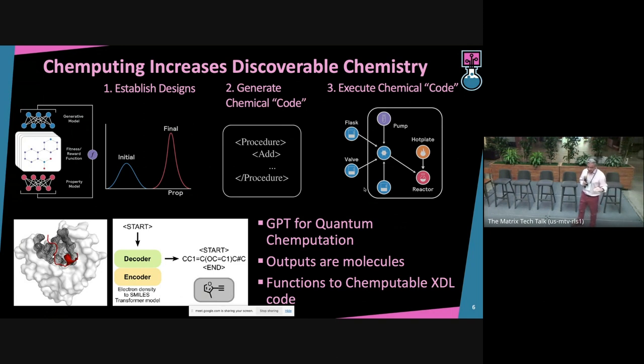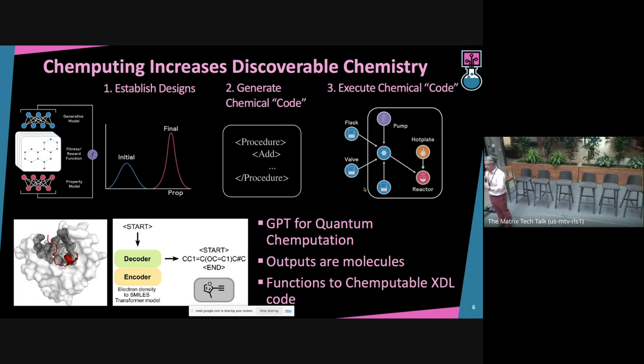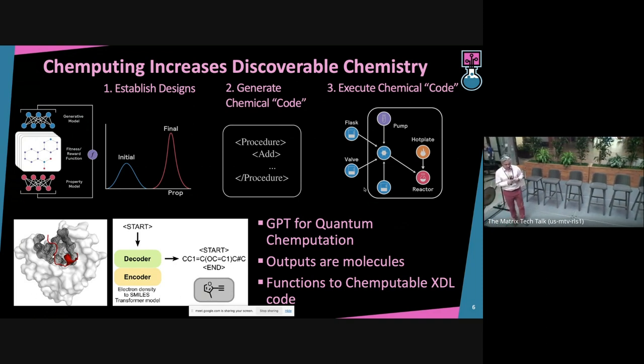Then you select those designs that will work. And yes, we made a GPT for chemistry, but it's not on language, it's on electron density. Electron density is what you put into proteins, you can then dream up new drugs. And that's literally what we've been doing.